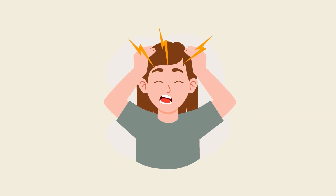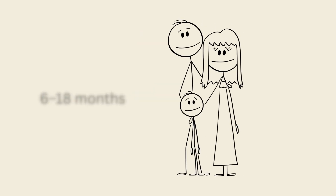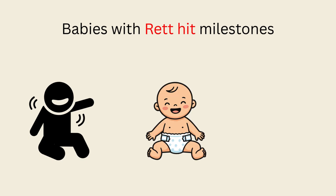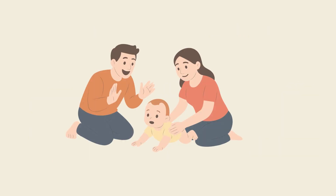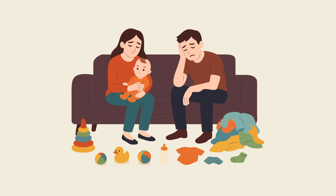Rett Syndrome is a rare neurological disorder that almost exclusively affects girls. For the first several months of life — usually up to about 6 to 18 months — development seems perfectly normal. Babies with Rett hit milestones: they babble, smile, clap their hands, and even start walking. Parents often believe everything is on track. Then, slowly and suddenly, progress stops and skills begin to slip away.